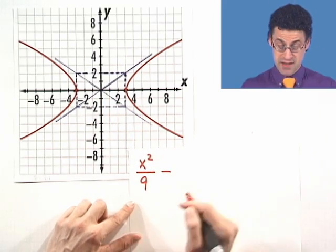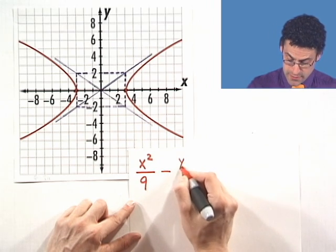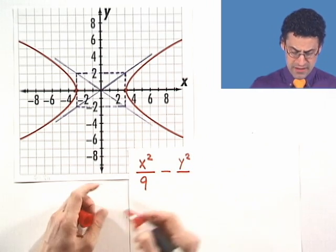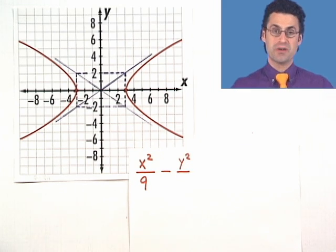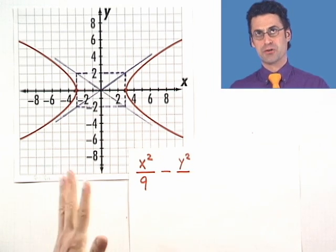Minus, because remember now it's a hyperbola, y squared. And now how am I going to find the co-vertex? Well, the co-vertices are pretty easy to find. Well, that's not true. They're not easy to find, but they're neat to look at.